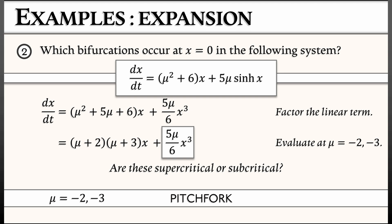And that means what we need to do is evaluate that coefficient at mu equals negative 2, at mu equals negative 3. In both cases, we get a negative number in front of x cubed. That means that these are both supercritical pitchfork bifurcations.